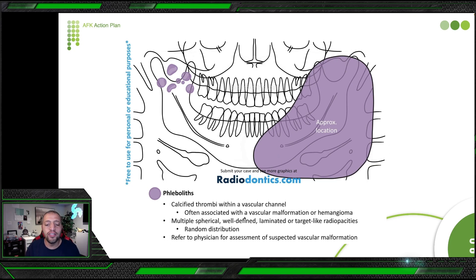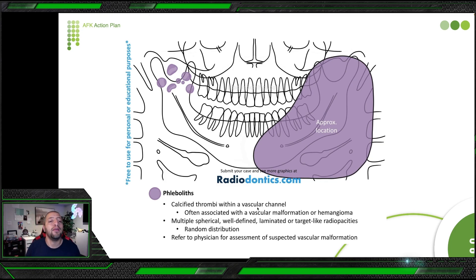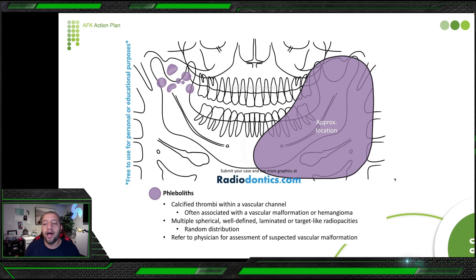Phlebolith is a calcified thrombus within a vascular channel, often associated with vascular malformation or hemangioma. Its most important feature: it shows radiopacity with a radiolucency inside — a ring-like or target-like appearance — because you see the calcified wall of the vascular channel surrounding the radiolucent lumen. It appears as multiple spherical, well-defined, laminated, target-like radiopacities in random distribution. Refer for assessment of suspected vascular malformation.